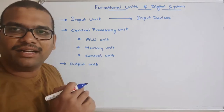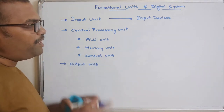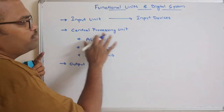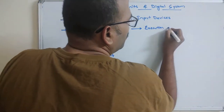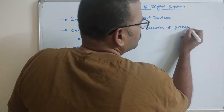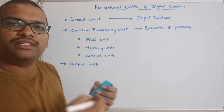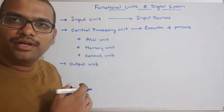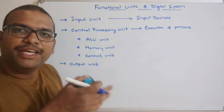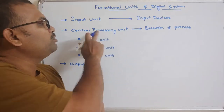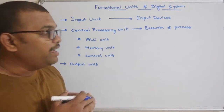Once the input is given, the system will start processing the data to produce the output. The complete execution of any process is done by the central processing unit. Whatever instructions the user gives, those instructions will be executed only by the processing unit — the processor will execute everything.